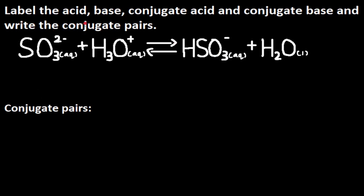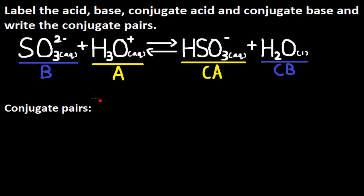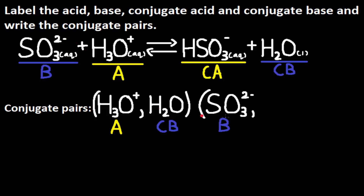Let's do this question: label the acid, base, conjugate acid, and conjugate base, and write the conjugate pairs. We have SO3²⁻ reacting with H3O⁺, producing HSO3⁻ and H2O. To produce HSO3⁻, H3O⁺ must donate its H⁺ ion to SO3²⁻, so H3O⁺ is the Brønsted-Lowry acid and SO3²⁻ is the Brønsted-Lowry base. Whatever the acid produces is the conjugate acid: when H3O⁺ donates its H⁺ to SO3²⁻, it produces HSO3⁻ — the conjugate acid — and H2O is the conjugate base. To write conjugate pairs, put opposites together: H3O⁺ (acid) pairs with H2O (conjugate base), and SO3²⁻ (base) pairs with HSO3⁻ (conjugate acid).